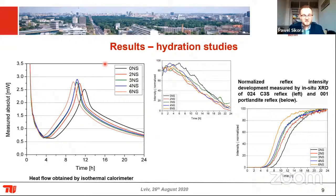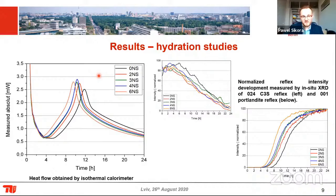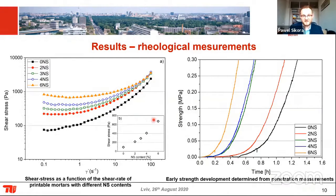Here are the hydration results. The reference mortar is shown here, and NS means nanosilica. We can clearly see that with the addition of nanosilica, the hydration process is much faster and the peak is much higher — meaning clear acceleration of hydration when nanosilica is present. This is very important: the mixture reacts faster. This is also visible in the penetration measurement, where we evaluated strength development at early ages. The addition of nanosilica accelerates the setting time and hardening, which is very beneficial.